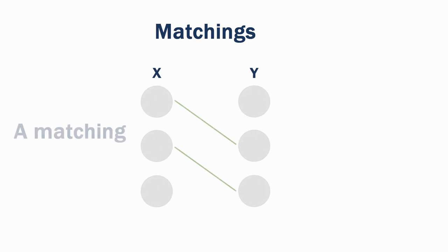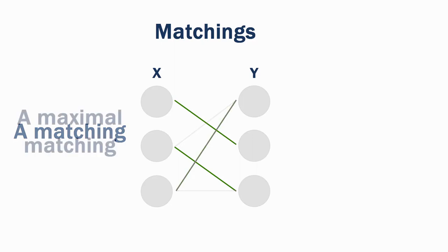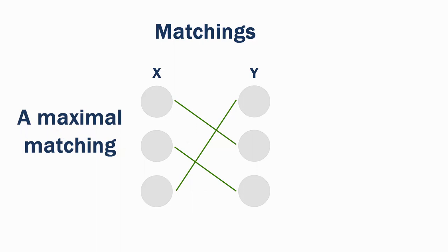A matching is a set of edges from a given set of available edges, in which no two edges share a vertex. For unweighted graphs, a maximal matching is a matching which contains the maximum number of possible edges. For weighted graphs, a maximal matching is a matching for which no other matching has a higher total weight for edges within the matching.